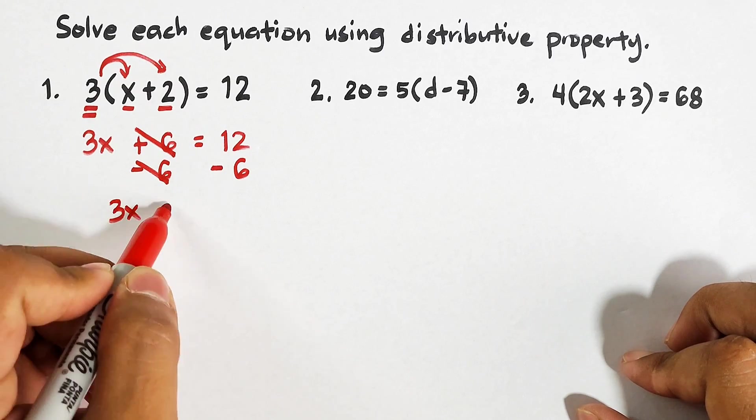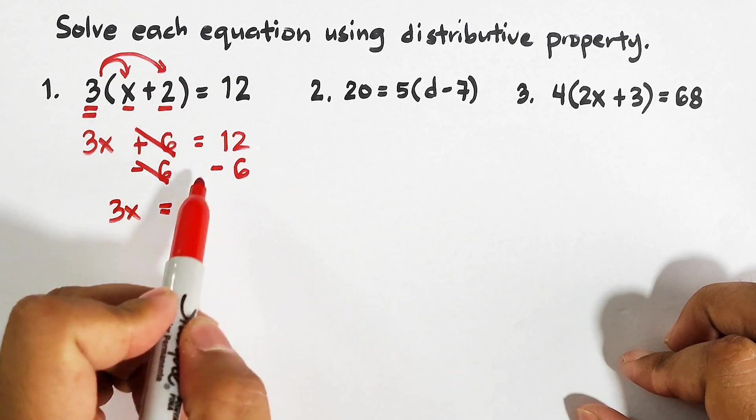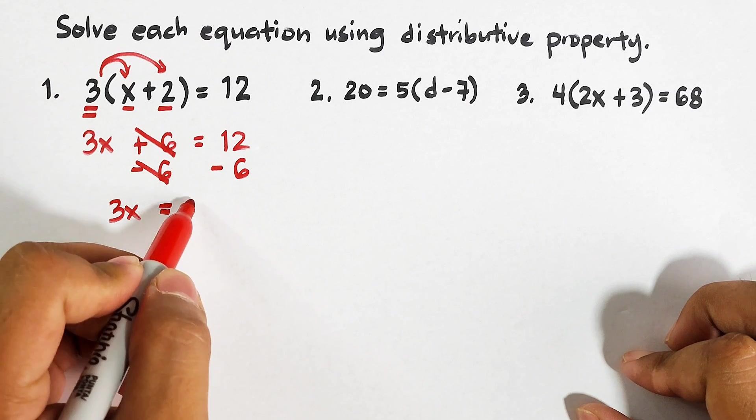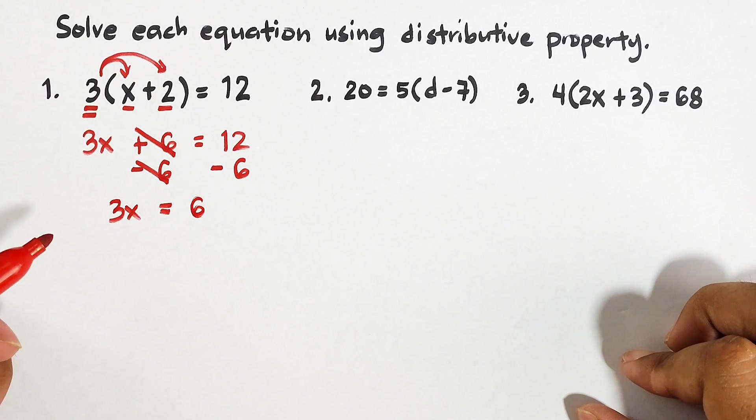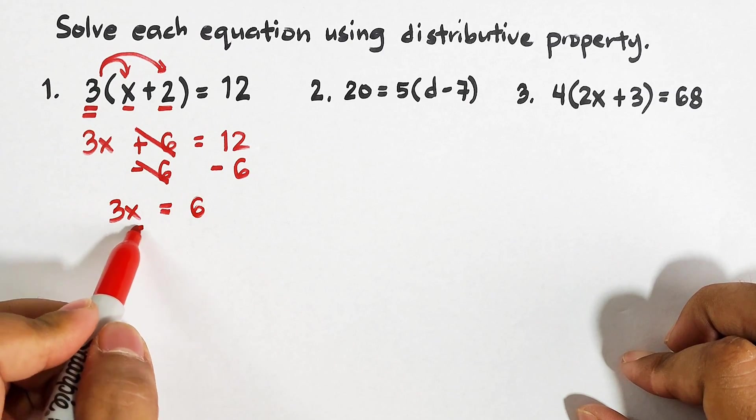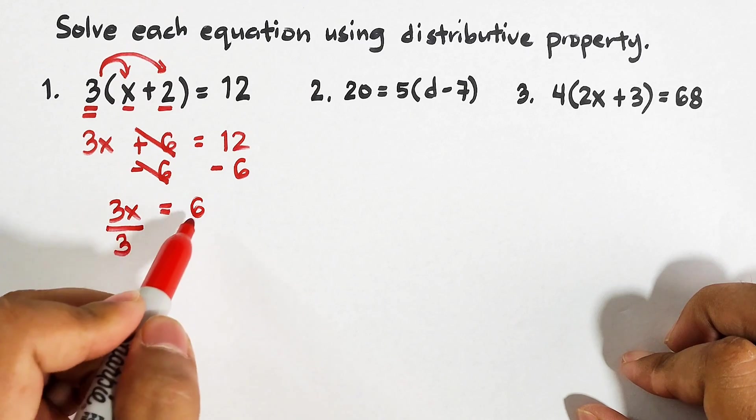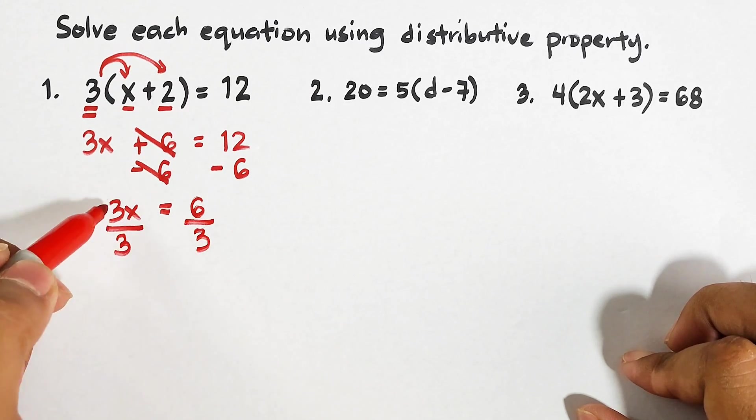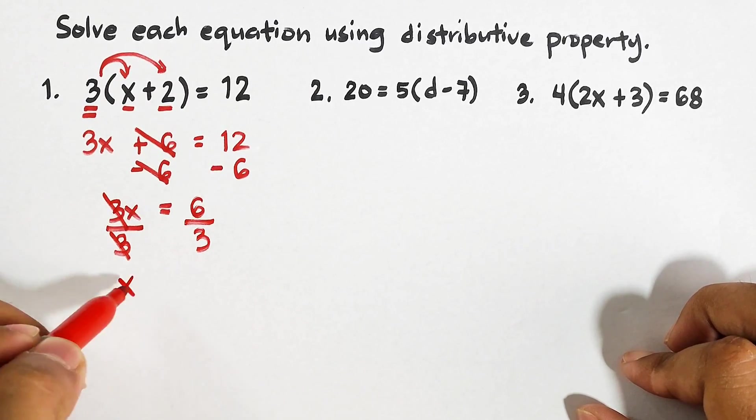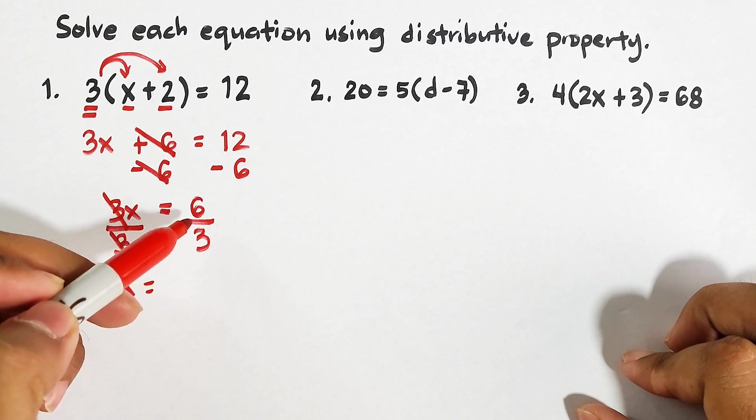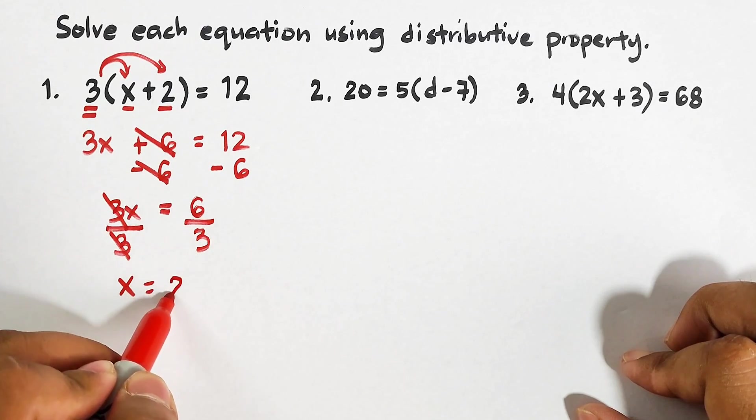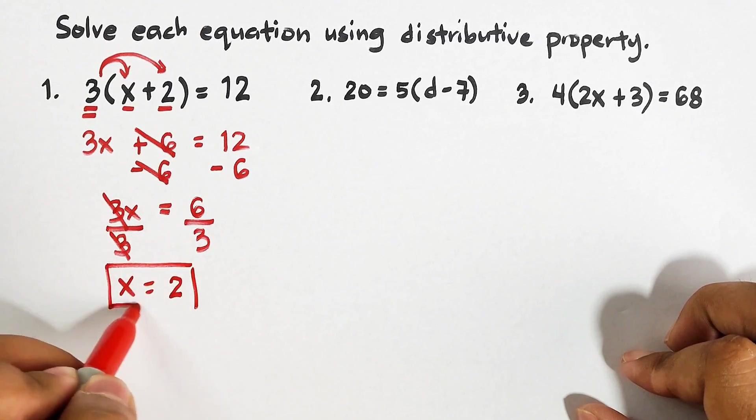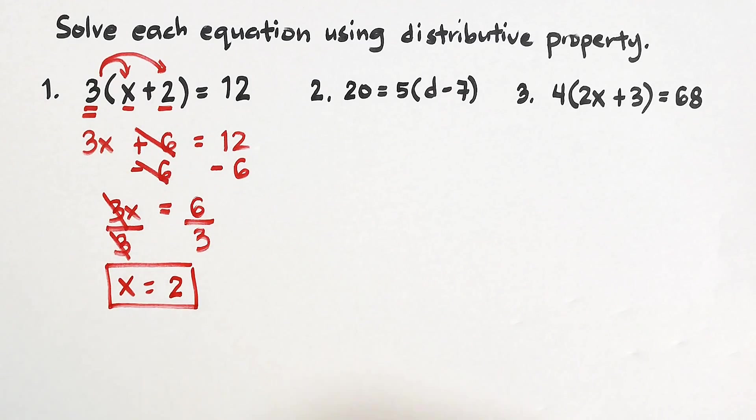On the other side we have 12 minus 6, which is equal to 6. And now finally we can divide this by 3. Cancel out, cancel out. You have x is equal to, simplifying this, 6 divided by 3, that would be 2. And here it is guys, the value of x is 2.